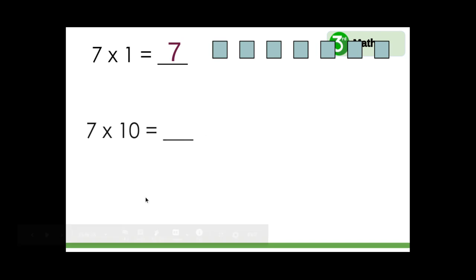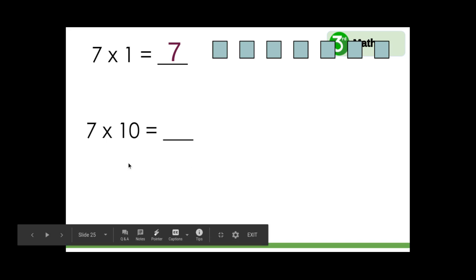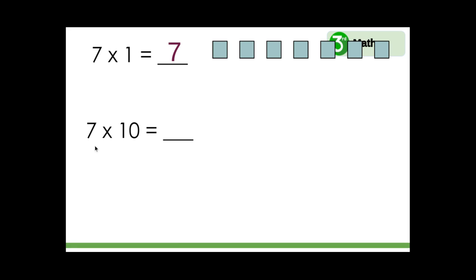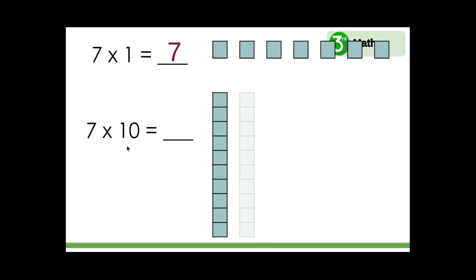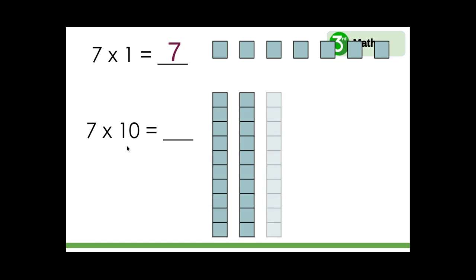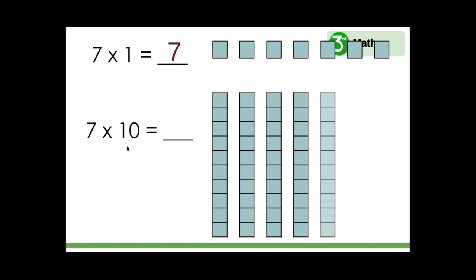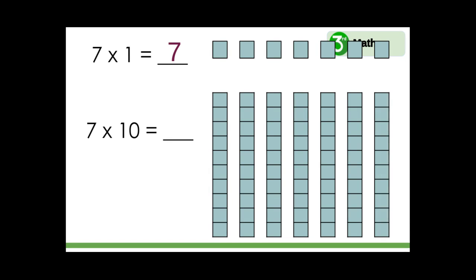What about seven times ten? This is multiplying seven ten rods: ten, twenty, thirty, forty, fifty, sixty, seventy. So seven times ten equals seventy.